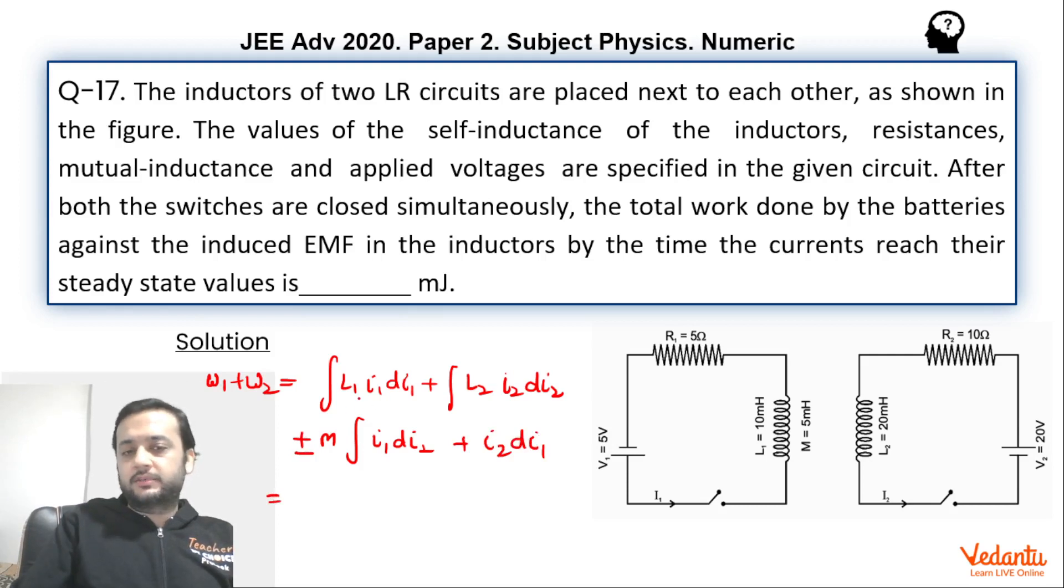If you integrate this, you can see that this will become half L1·I1 square plus half L2·I2 square plus or minus M·d of I1·I2. This is written d of I1·I2, that will become I1·I2.